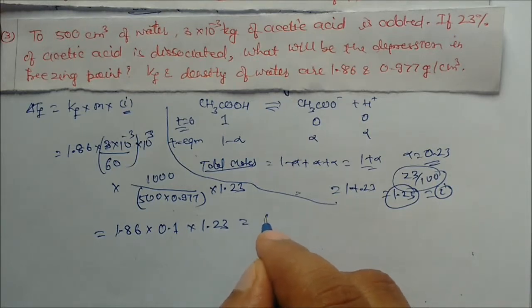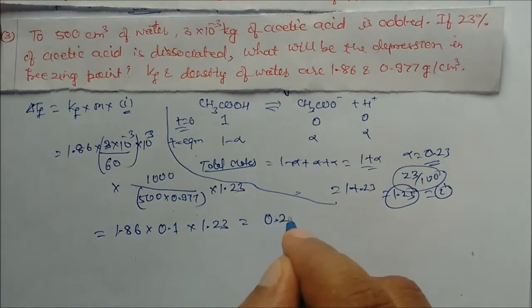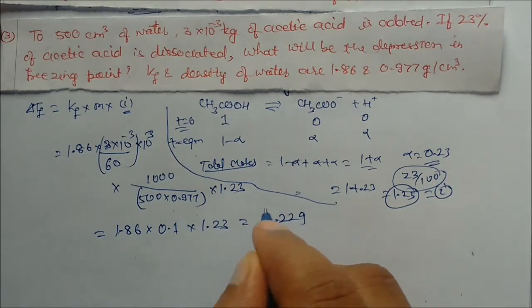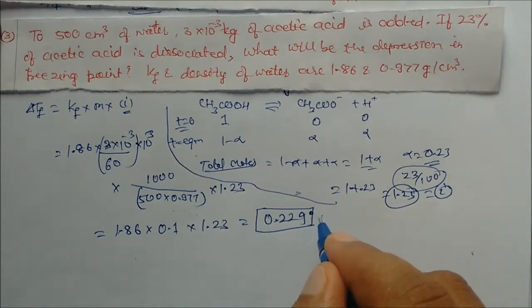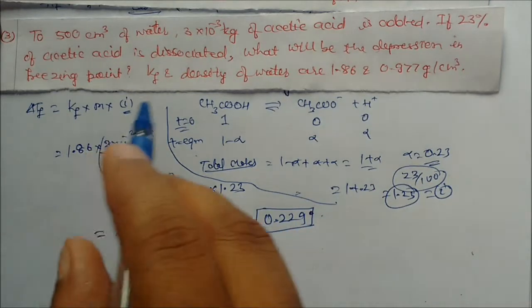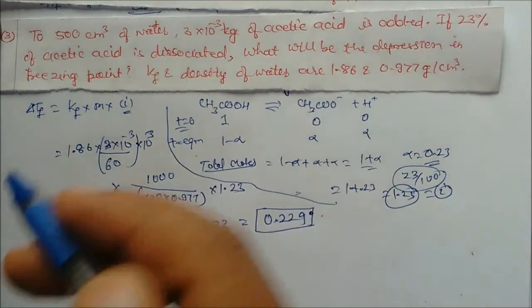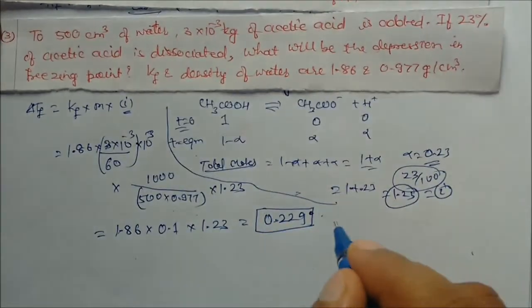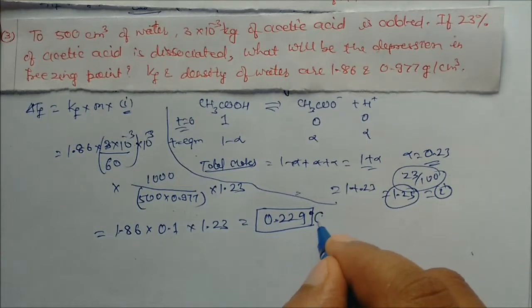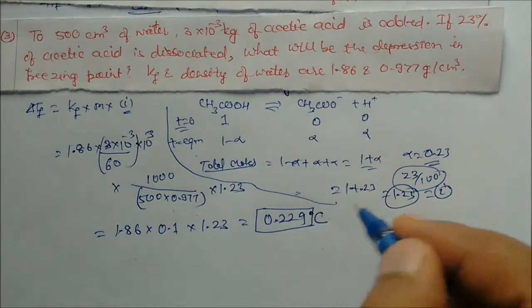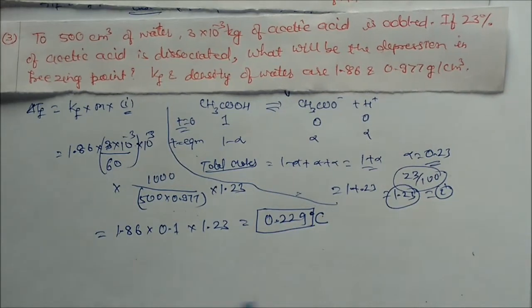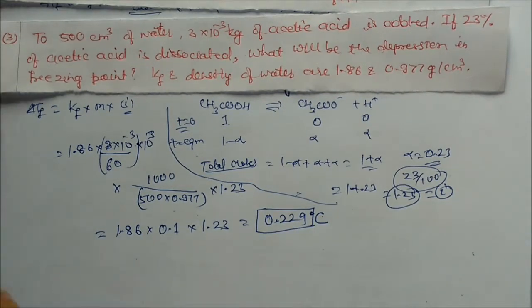On solving, delta Tf = 0.229 degrees. This is the depression in freezing point — the answer can be expressed in degrees Celsius or Kelvin.